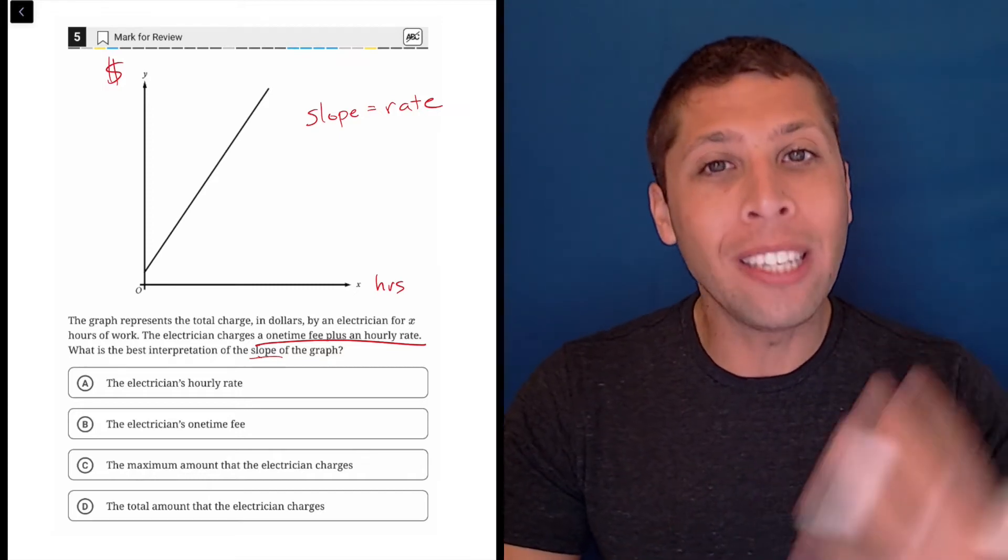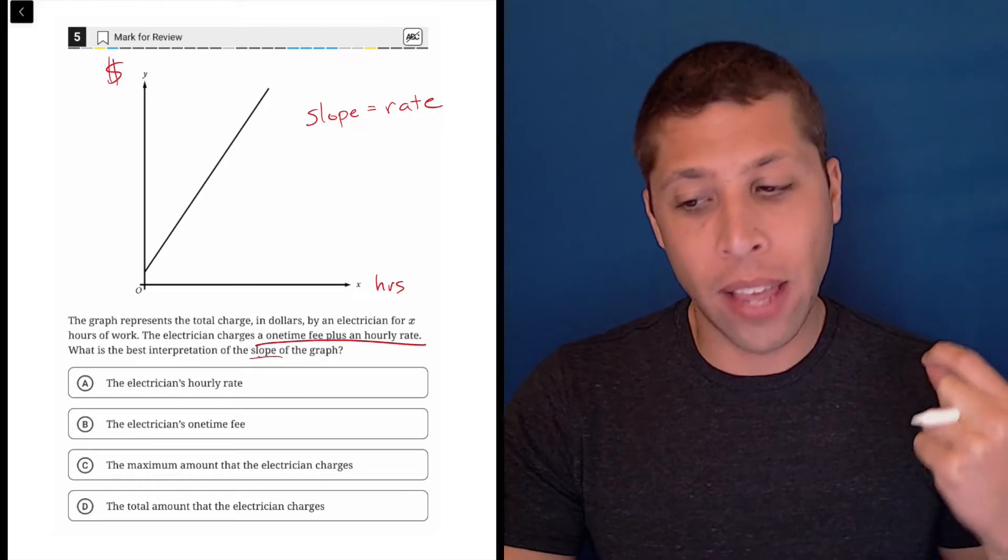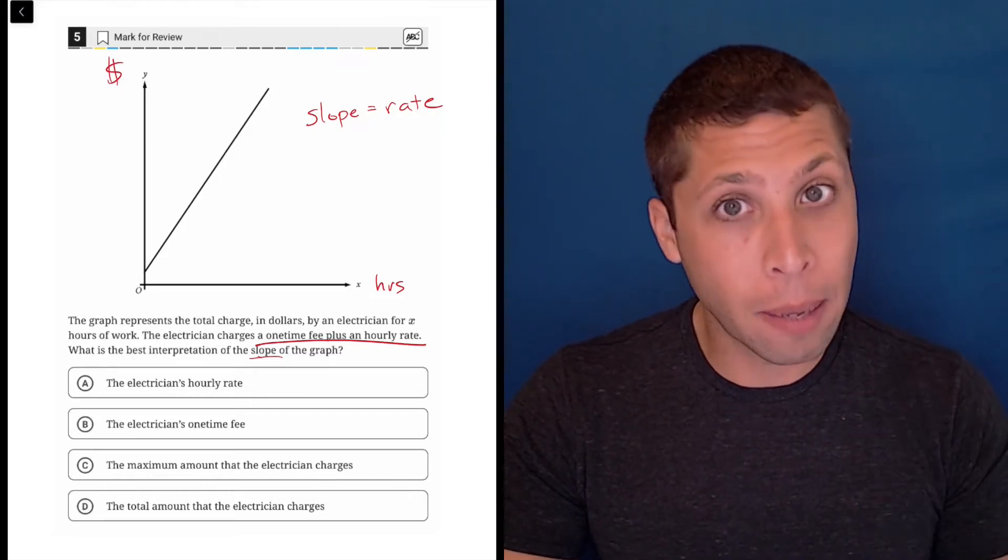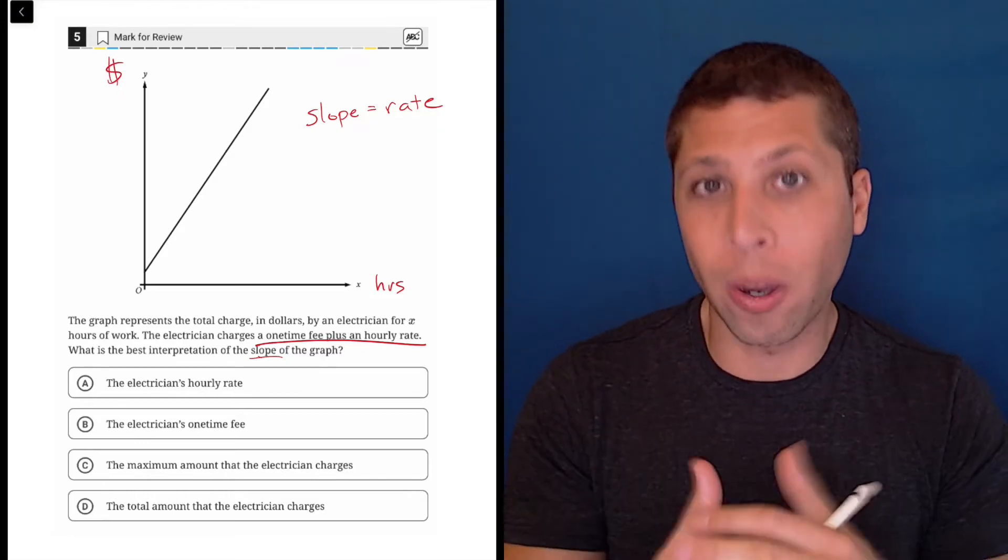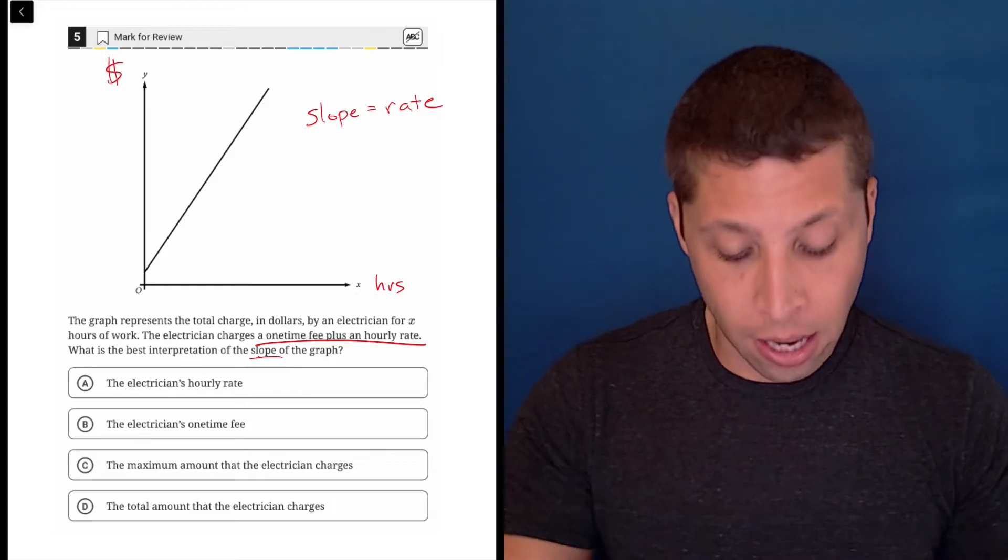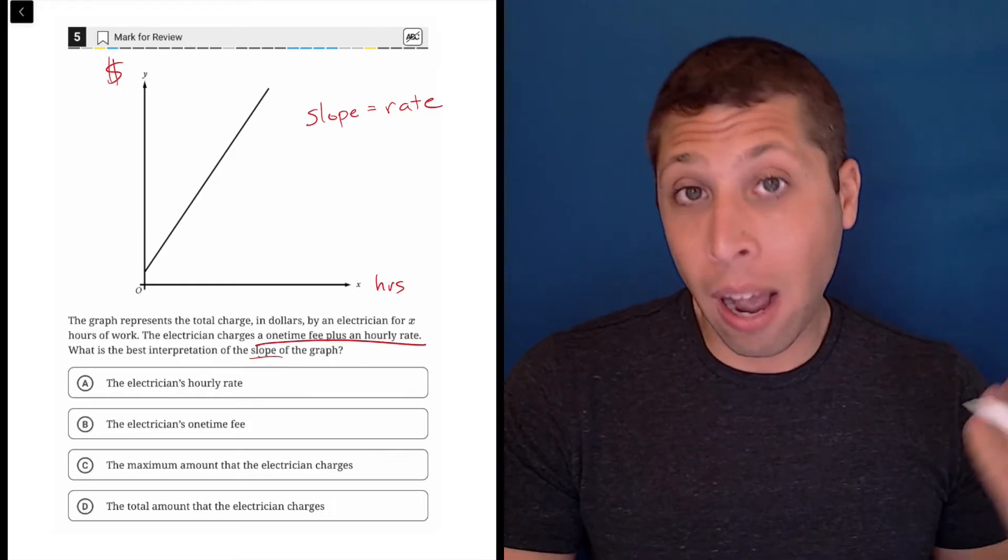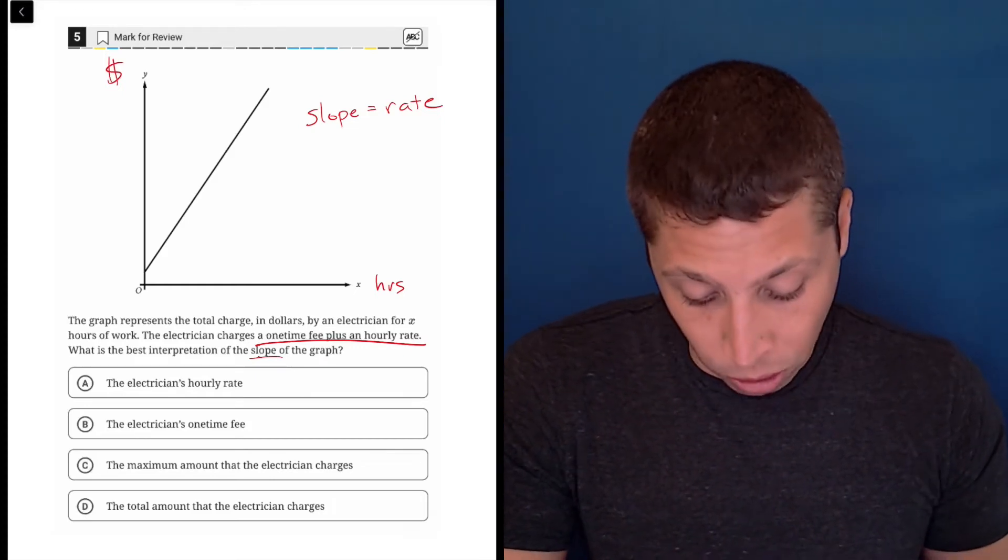And so what we need to do when we have a story is if they ask for slope or they talk about rates, we know that those two ideas are intimately connected. So the slope is the rate. So now I'm just going to go to these answer choices. What talks about the rate?